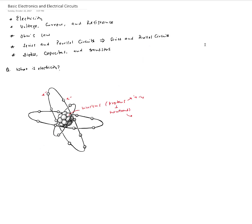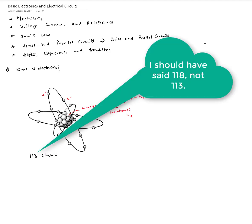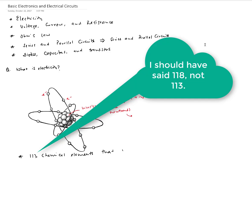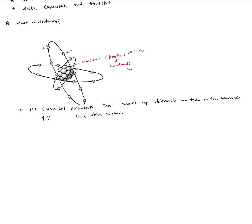Electrons are bound to the atom via the electrostatic force of attraction between the positively charged protons and negatively charged electrons. That's the basic structure of atoms — pretty much everything in the world is made of atoms. There are 113 chemical elements in the universe that make up observable matter. Only 4% of the matter in the universe is actually observable; 96% is known as dark matter, something we have no idea what it is made of.